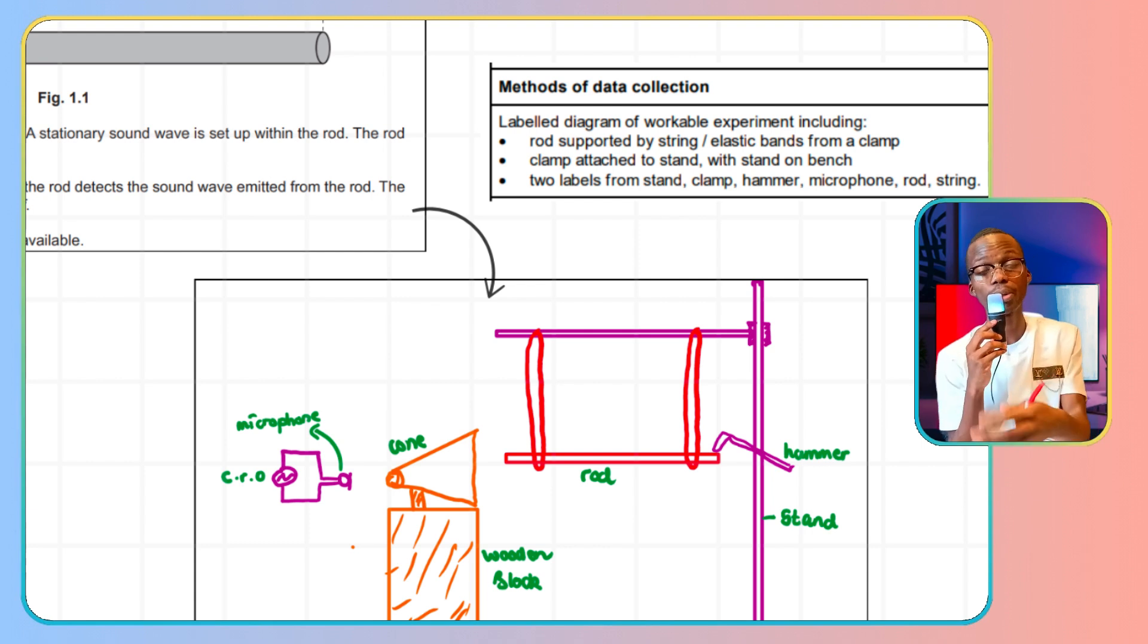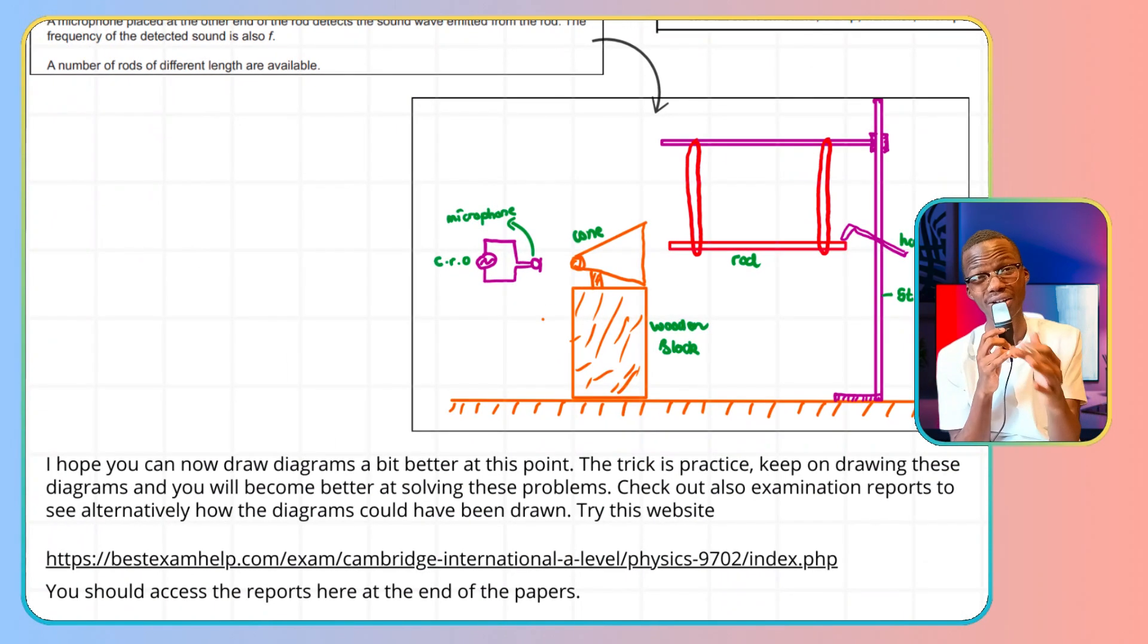So the trick with these questions, drawing a diagram, as we'll be concluding Method of Data Collection, is number one, start by listing how you're getting each variable. What equipment are you using to calculate that? And number two, draw the diagram that's going to help you be able to solve these kind of problems. Now, I hope you can do diagrams a bit better. The trick is practice. Keep on drawing these diagrams, and you'll become better at solving these kind of problems. Check out also examination reports. They tell you in depth what some students included, what other students didn't, and see how alternatively some diagrams could have been structured. You should be able to access them. I put a link in the description below. That's a very good resource where you can be able to access papers and the examination report. Love that website to death. That's the whole point. Under this, you should be able to get four or five marks in a method of data collection, which concludes the second part of our video series.